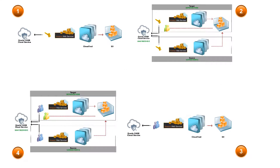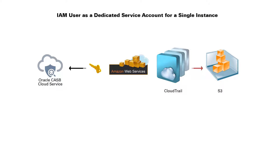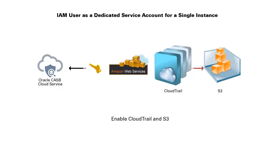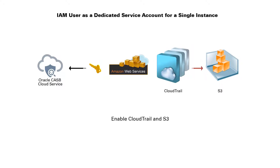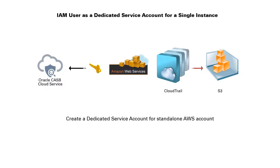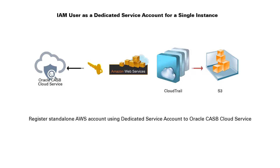There are four different scenarios in this series. Follow the scenario that is applicable to your architecture. For an IAM user as a dedicated service account for a single instance, you will need the following videos: Turn on CloudTrail and S3 in an AWS account; Create a dedicated service account for a standalone AWS account; and Register standalone AWS account using dedicated service account to Oracle CASB Cloud Service.